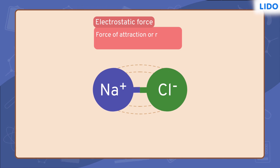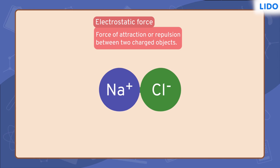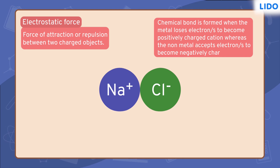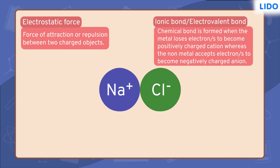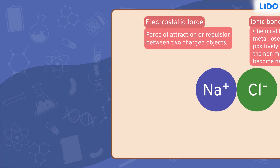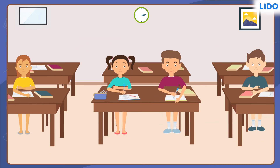This force of attraction between the oppositely charged ions, formed by a give and take of electrons, is called an ionic bond or electrovalent bond. This bond ultimately results in the formation of a molecule of sodium chloride. Like Ram and Tina, you all should continue with your chemistry class too. See you next time.